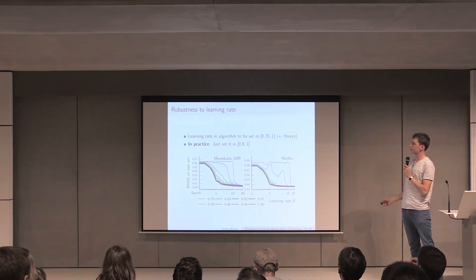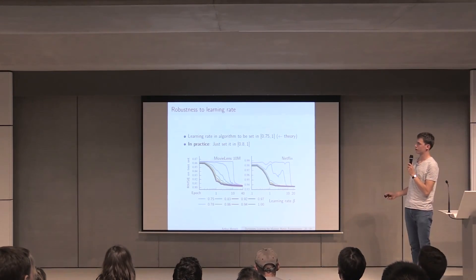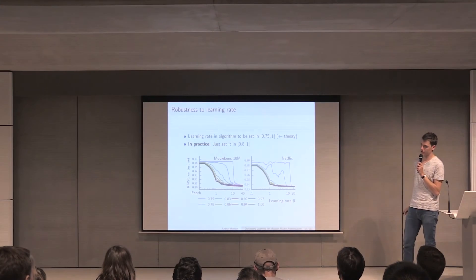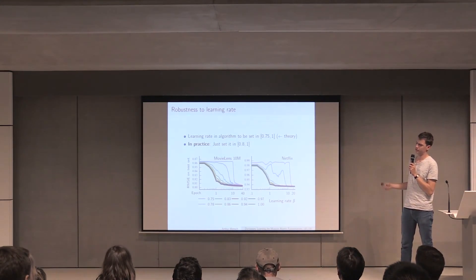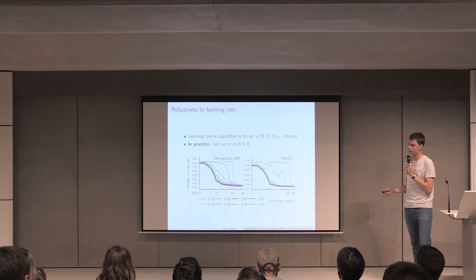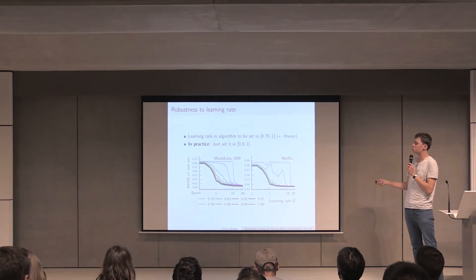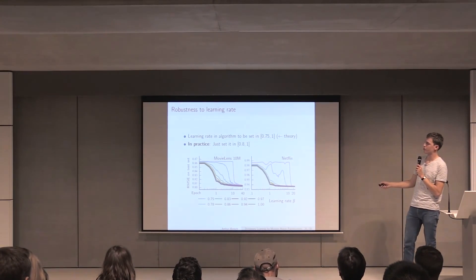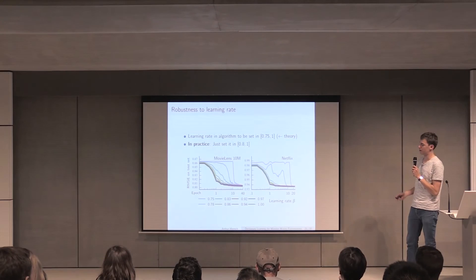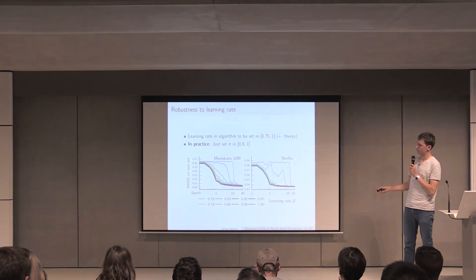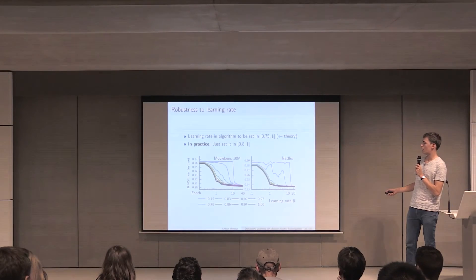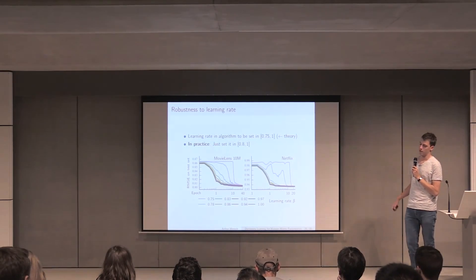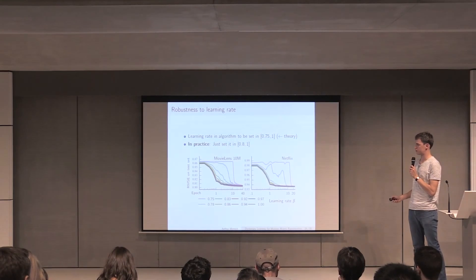A last slide on how we are robust to learning rates. In the online dictionary learning algorithm, there is a learning rate for learning the parameters of the surrogate, and the theory predicts that we should set it in this range, 0.75 to 1. In practice, we just need to set it between 0.8 and 1, and we see that all of these curves basically behave more or less the same and have the same end value after convergence.